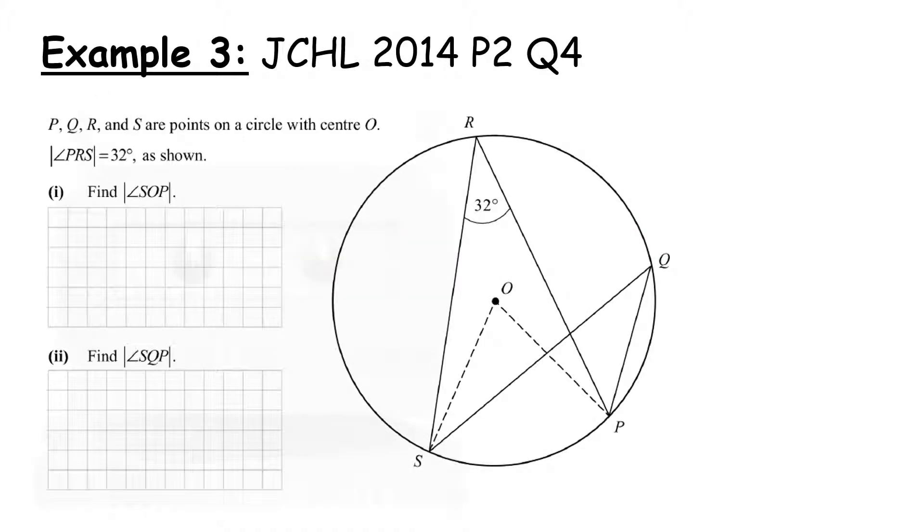Now let's take another example here. P, Q, R, and S are points on a circle with centre O. Angle PRS is 32 degrees and that's given to us in the diagram. They want us to find SOP, which is this angle here. By using our circle theorem, we can know that the angle at the center of the circle is twice the angle at the circle. Therefore, the angle SOP is twice the angle at the circle, so it's twice 32 degrees which is 64 degrees.